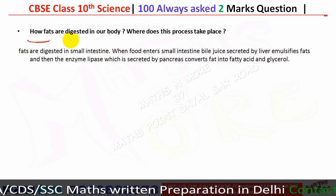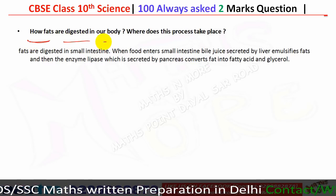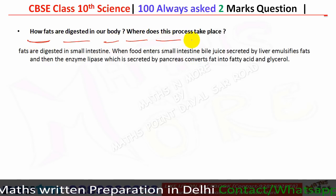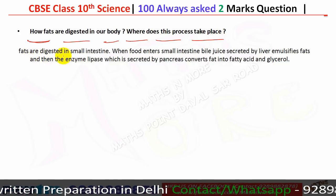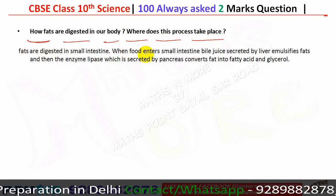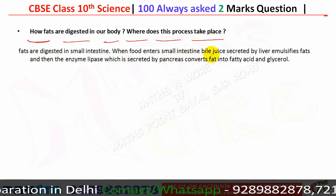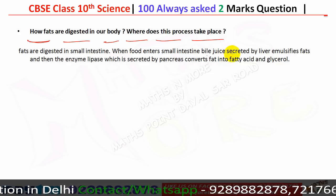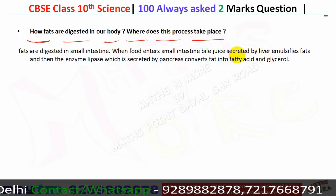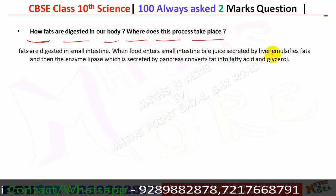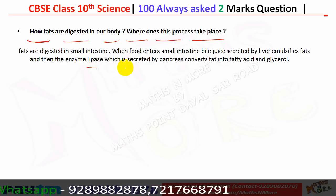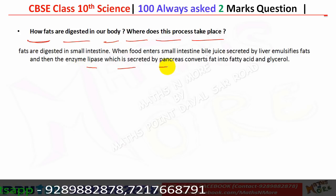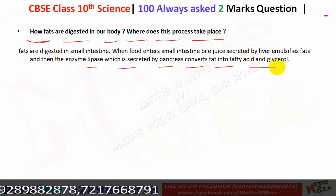Fats are digested in the small intestine. When food enters the small intestine, bile juice secreted by the liver emulsifies the fat. Then the enzyme lipase, secreted by the pancreas, converts fat into fatty acids and glycerol.